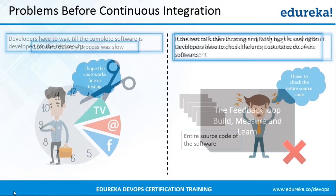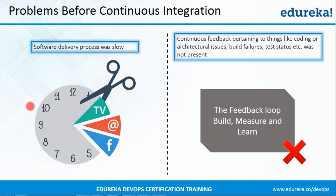So the third problem was: software delivery process was slow. Developers were actually wasting a lot of time in locating and fixing of bugs instead of building new applications. As we just saw, locating and fixing of bugs was a very time-consuming task, due to which developers were not able to focus on building new applications. You can relate that to the diagram which is present in front of your screen — just as we waste a lot of time on TV and social media, similarly developers were wasting a lot of time in fixing bugs.